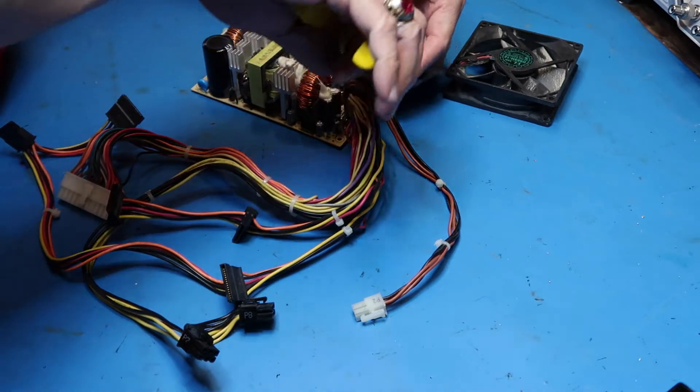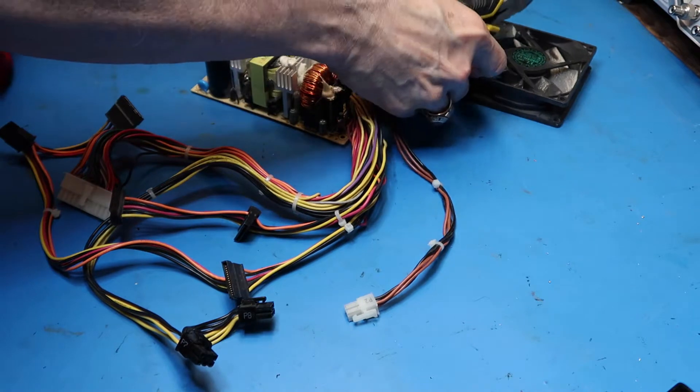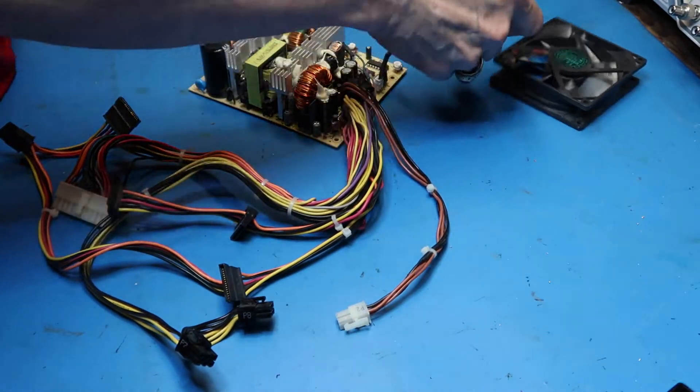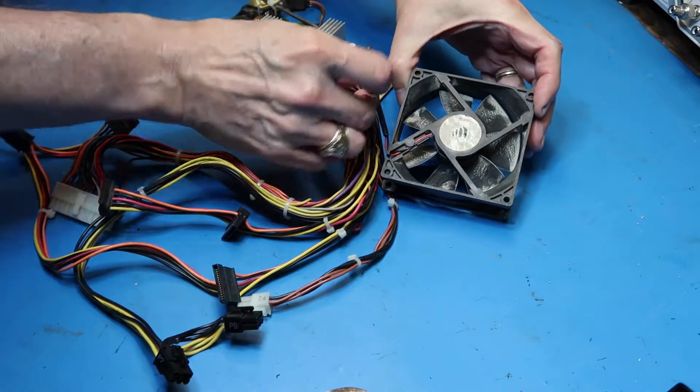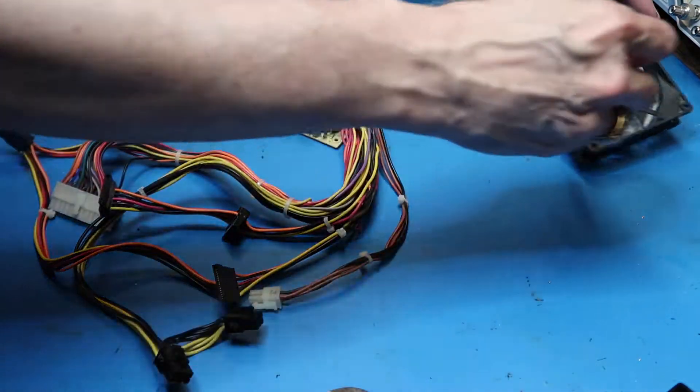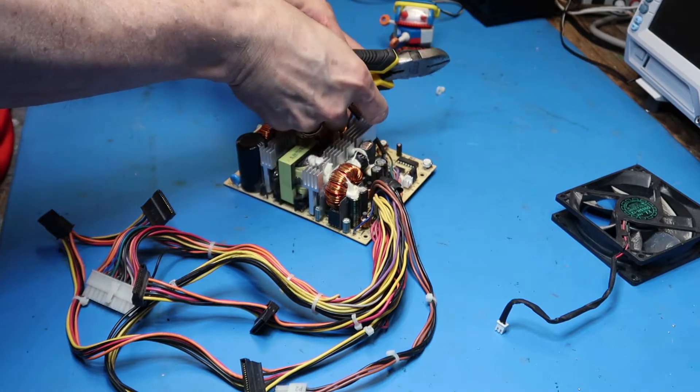As a first step we can just go ahead and clip off these tie wraps. That frees up our very first prize. The muffin fan. 12 volt muffin fan useful for a variety of projects. Here's another one.